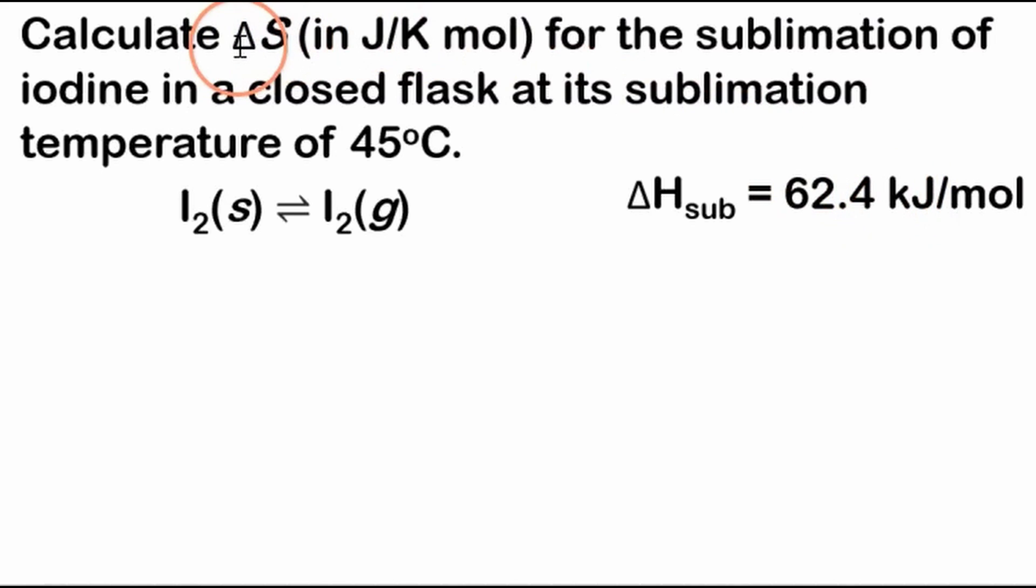So to calculate the change in entropy, and we're given the change in enthalpy and this reaction, we're going to use our Gibbs free energy equation. And I'll just write it out here, ΔG = ΔH minus T ΔS. Now, at the sublimation temperature, the two phases are in equilibrium. So when they're in equilibrium, then the change in Gibbs free energy is equal to zero. This is at the temperature of any phase change. So know this.